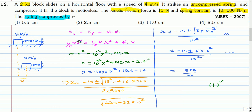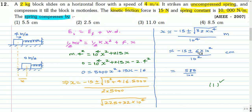Using v = 4 m/s, K = 10,000 N/m, and friction force = 15 N, this gives a quadratic equation in x. Solving using the quadratic formula (−b ± √(b² − 4ac)) / 2a, and noting that 13 × 10⁴ + 225 ≈ 32 × 10⁴, we get x ≈ 5.85 cm. So the correct option is option 1.